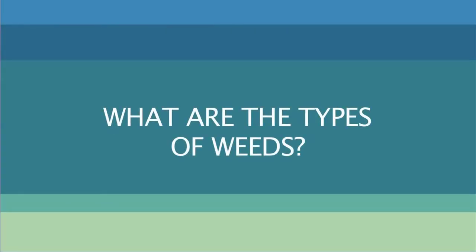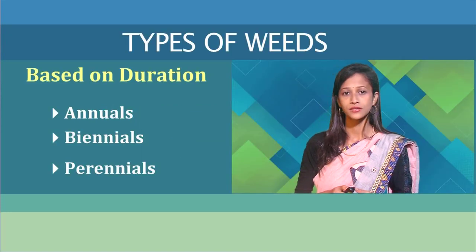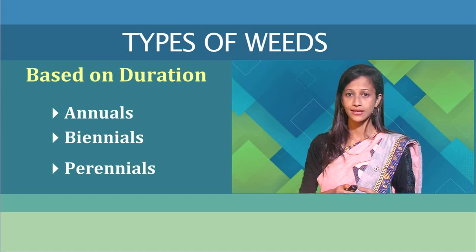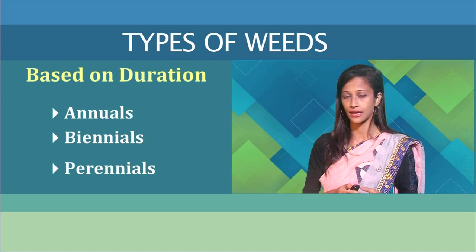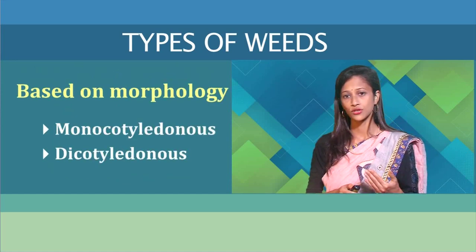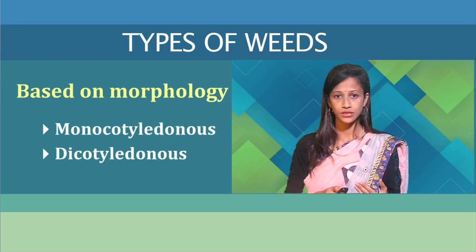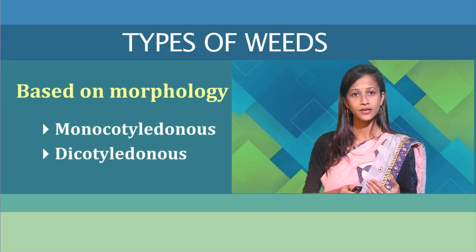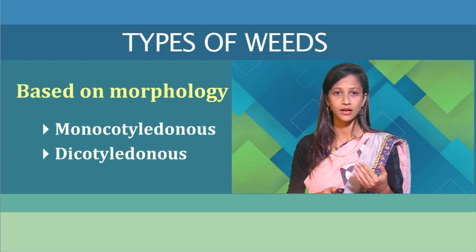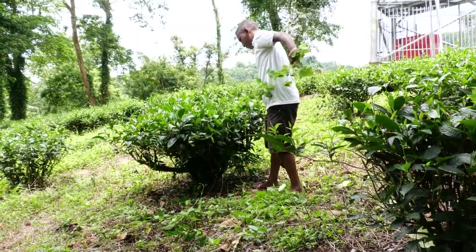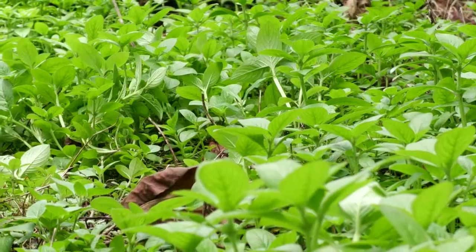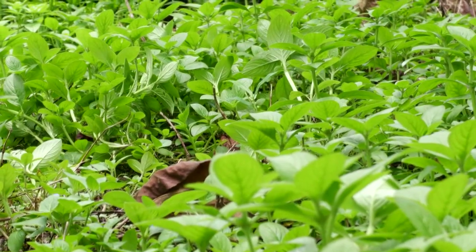What are the types of weeds and how are these weeds classified? Weeds are classified on the basis of the duration of their life cycle as annuals, biennials, and perennials. Morphologically, major weeds belong to either monocotyledonous, which have narrow leaves, or dicotyledonous, which have broad leaves. In tea gardens, several species of grasses — both monocotyledonous and dicotyledonous — commonly infest the tea fields.